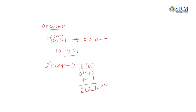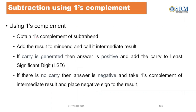One's complement and two's complement are very much used in computers for performing subtraction operations. Let us see how subtraction is done using one's complement. The procedure is: obtain the one's complement of the subtrahend — the second term. For example, if I am doing A minus B, I keep A as such and add the one's complement of B to it.